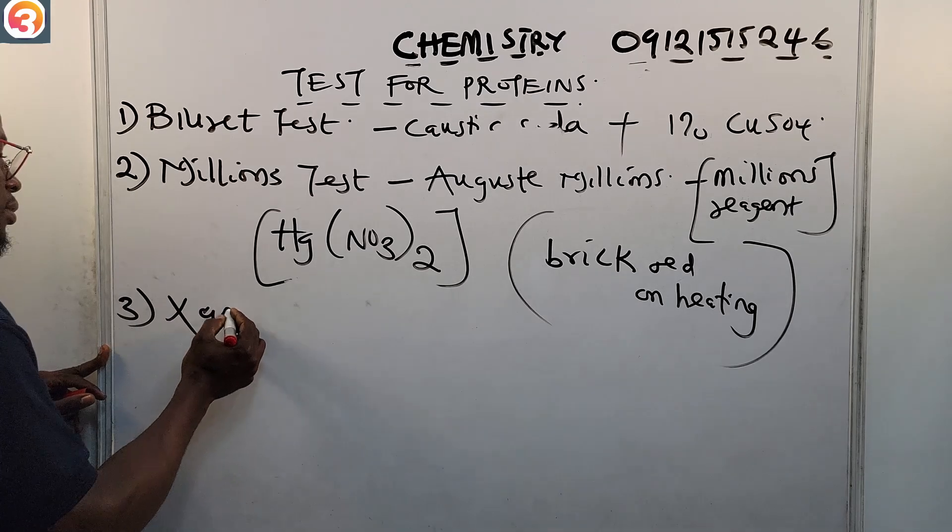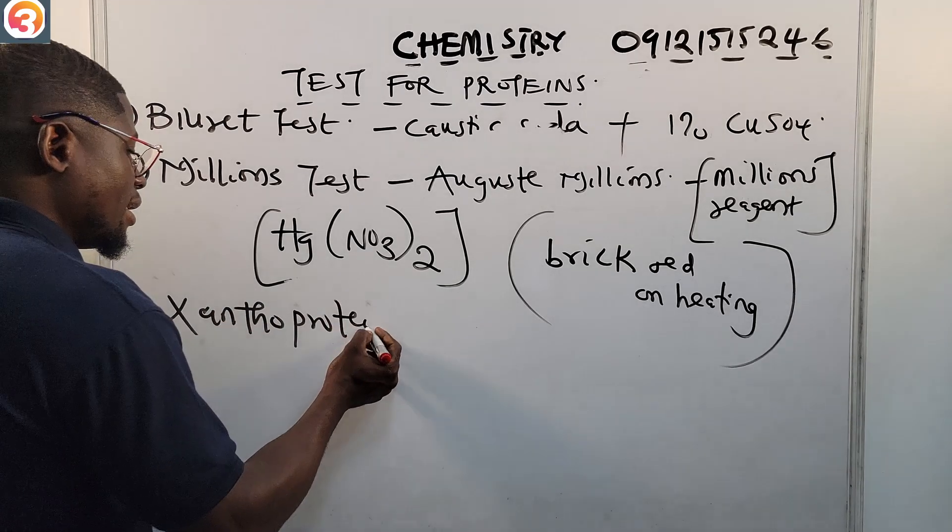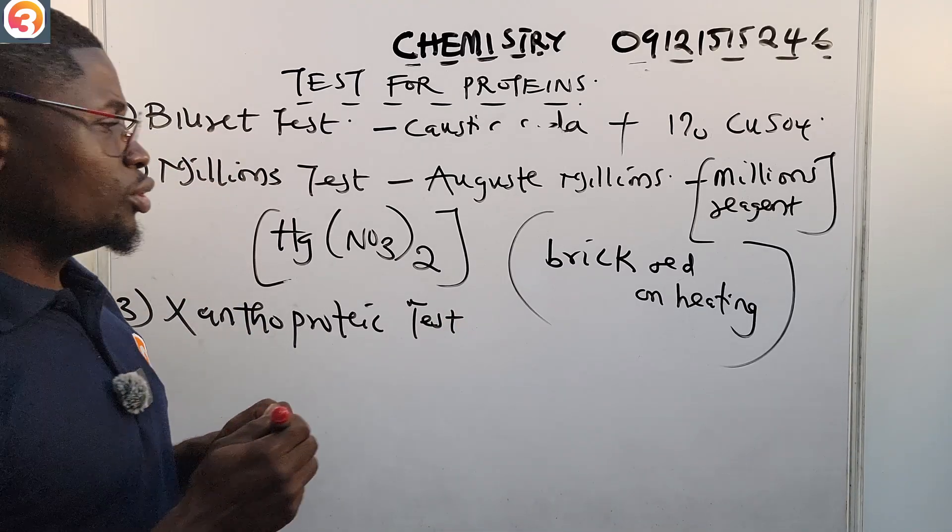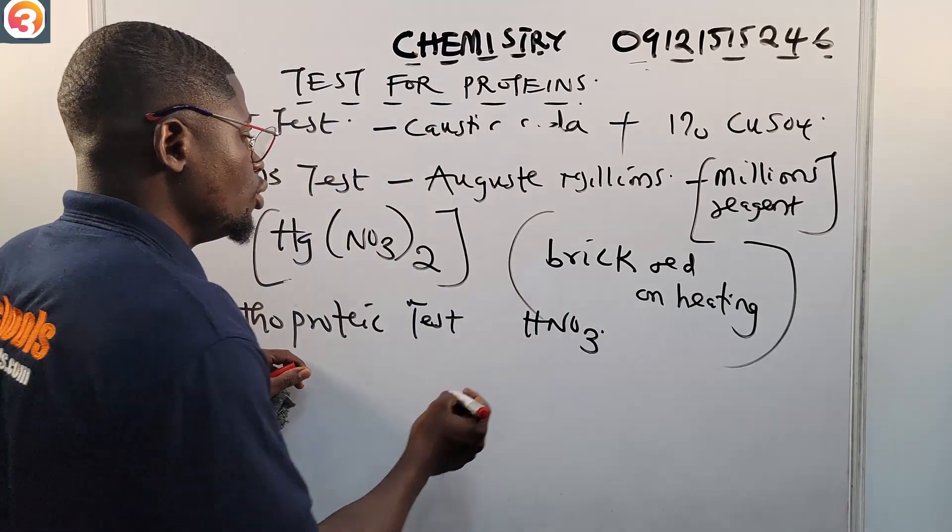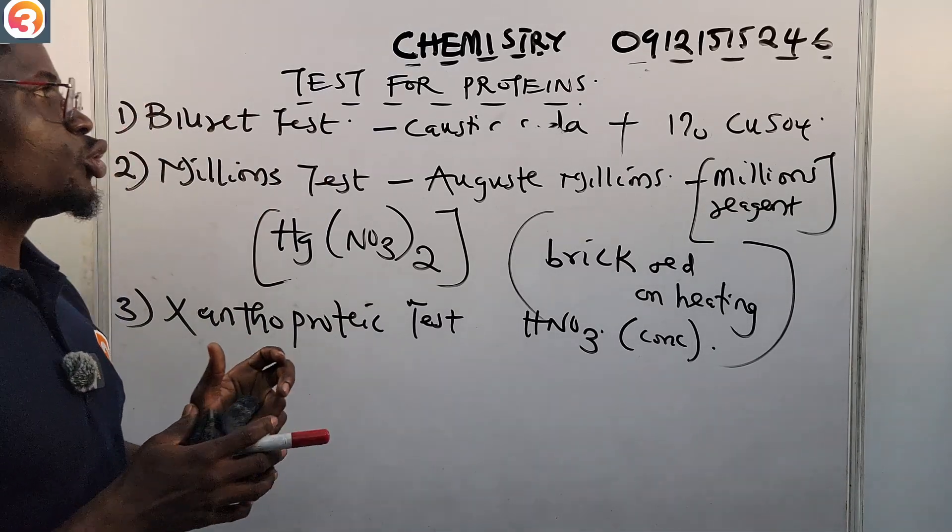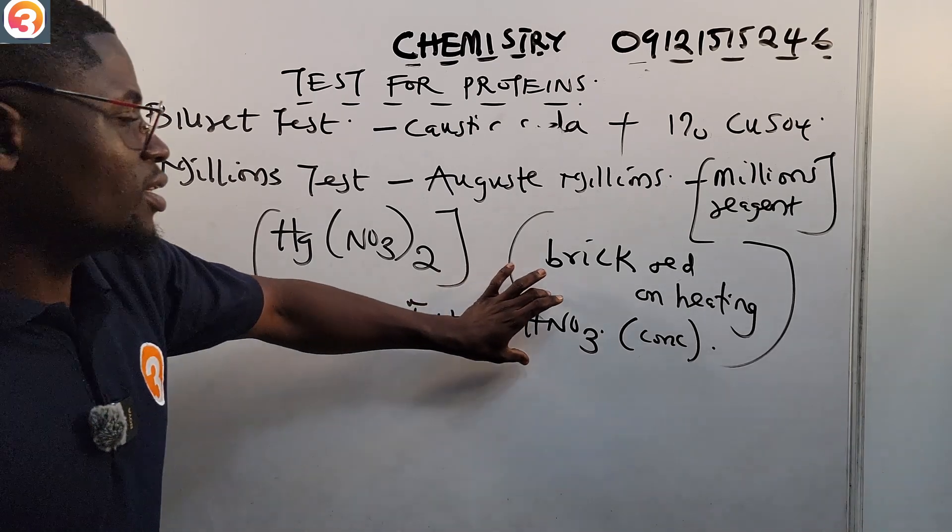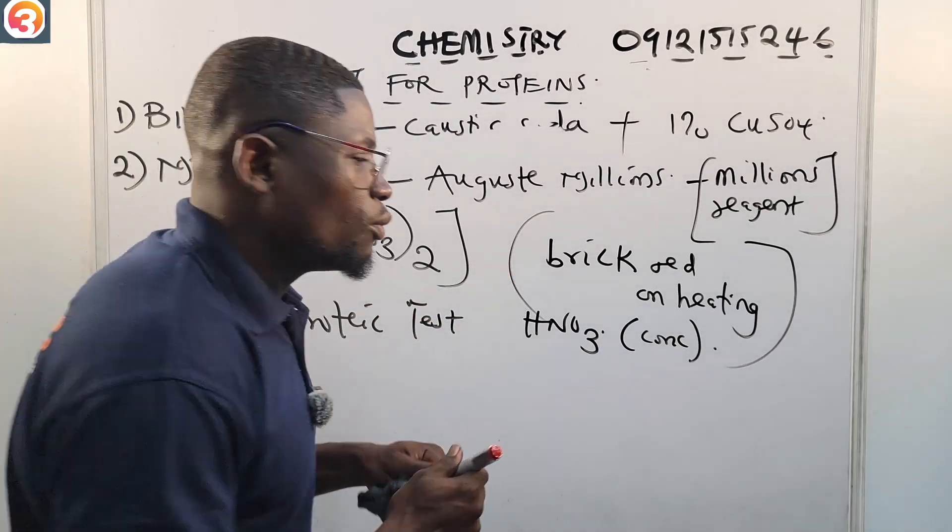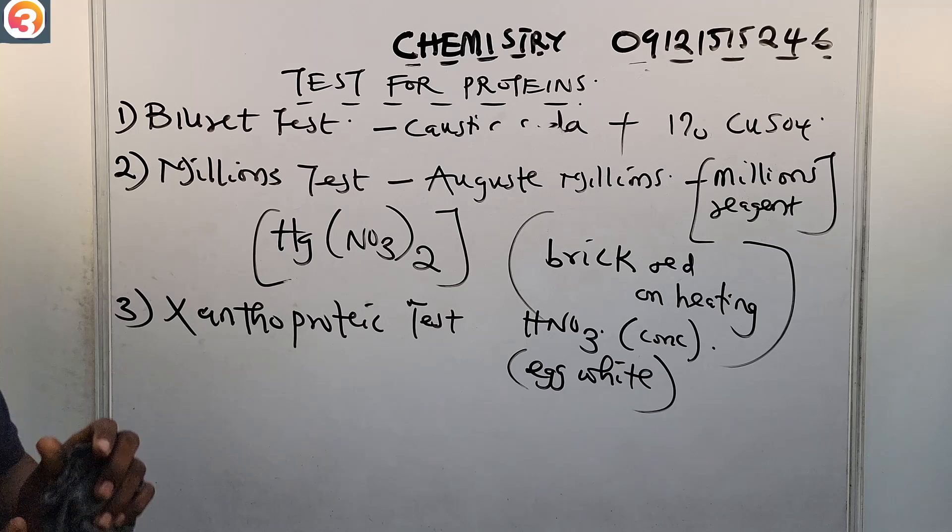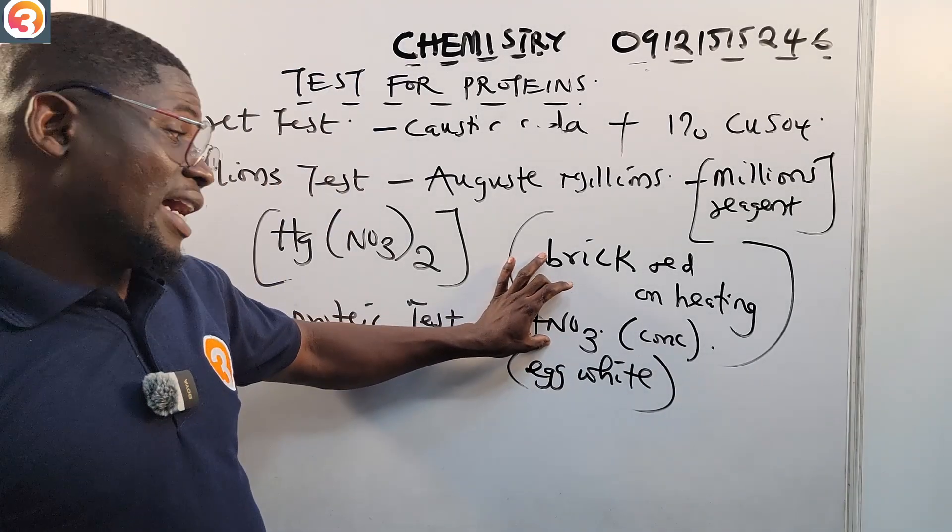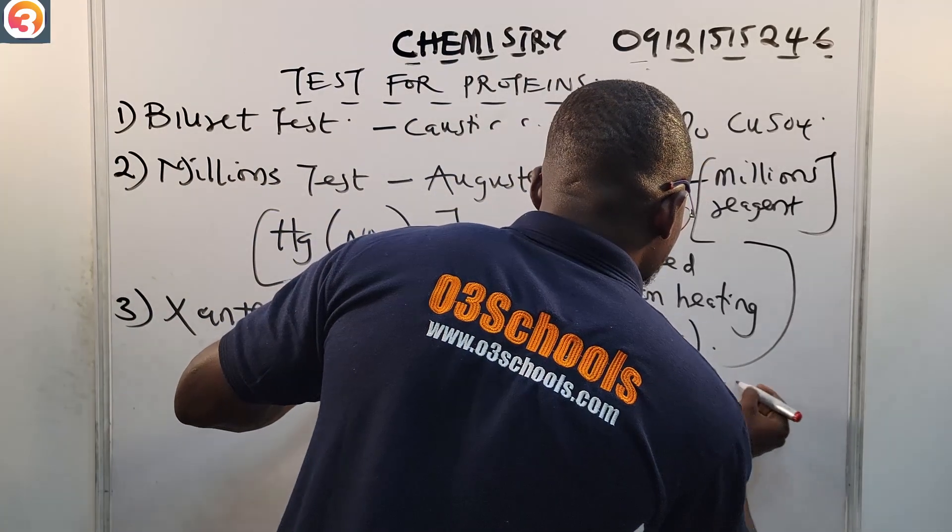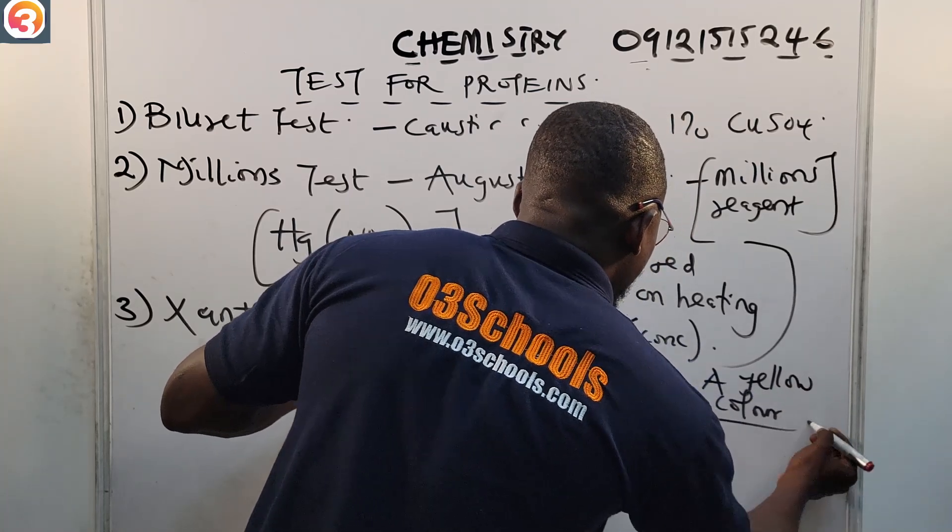For this xanthoproteic test, what you use is concentrated HNO3. We use concentrated trioxonitrate(V). And once we add concentrated trioxonitrate(V) to egg white, you know what is called egg white now, that white part of egg. So once you add concentrated trioxonitrate(V) to your egg white, you observe a yellow coloration.